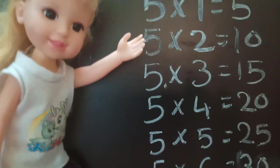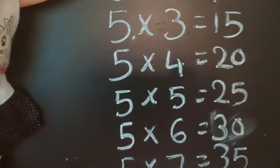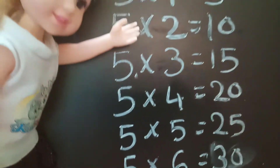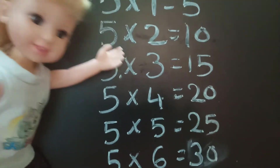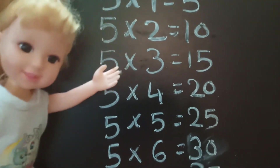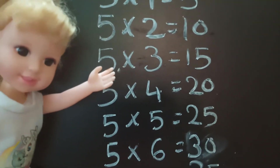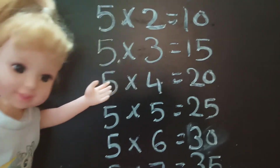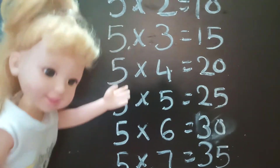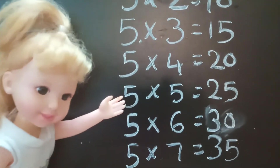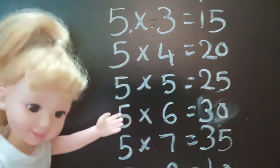Table No. 5. 5×1=5, 5×2=10, 5×3=15, 5×4=20, 5×5=25.